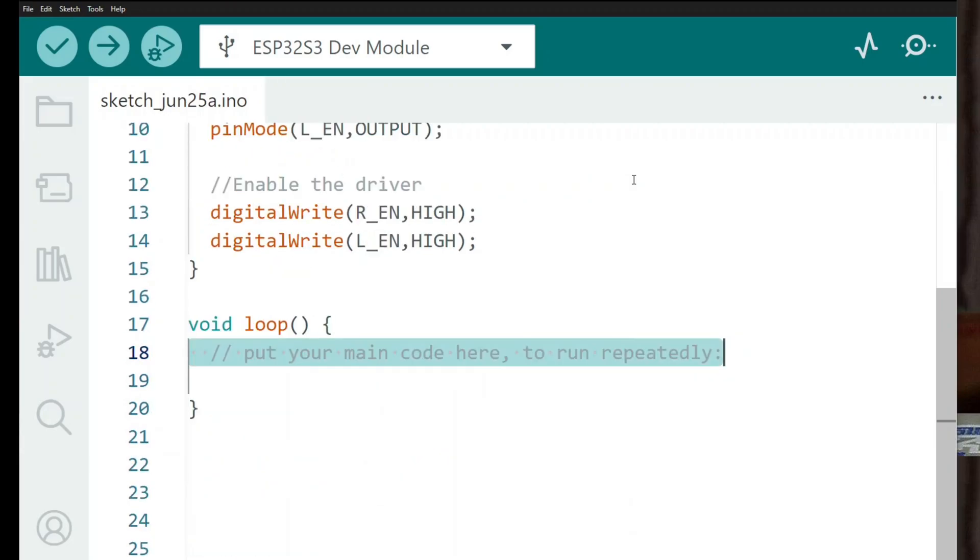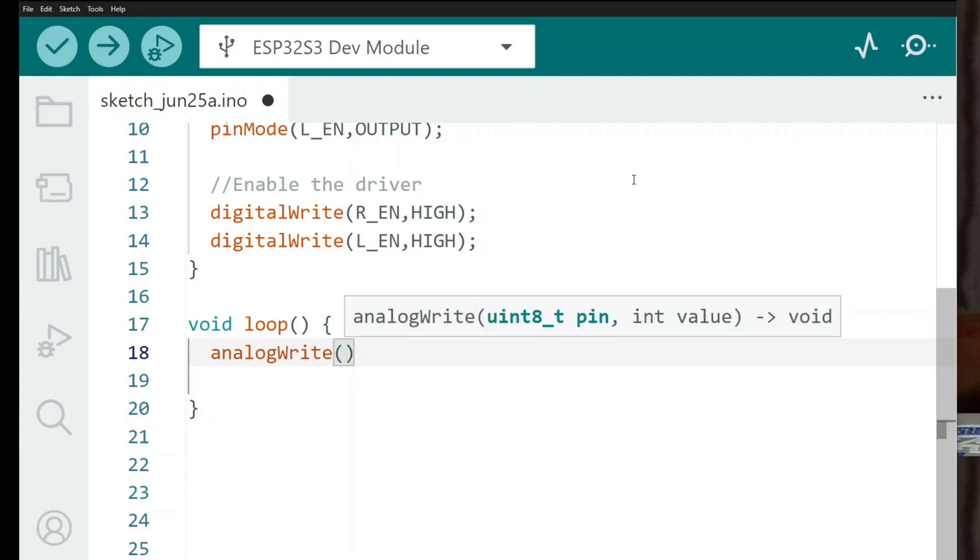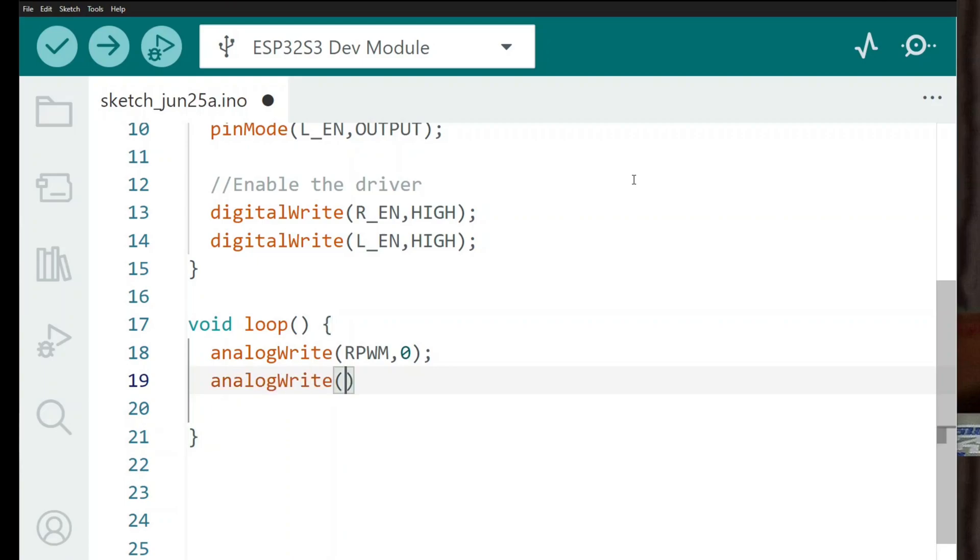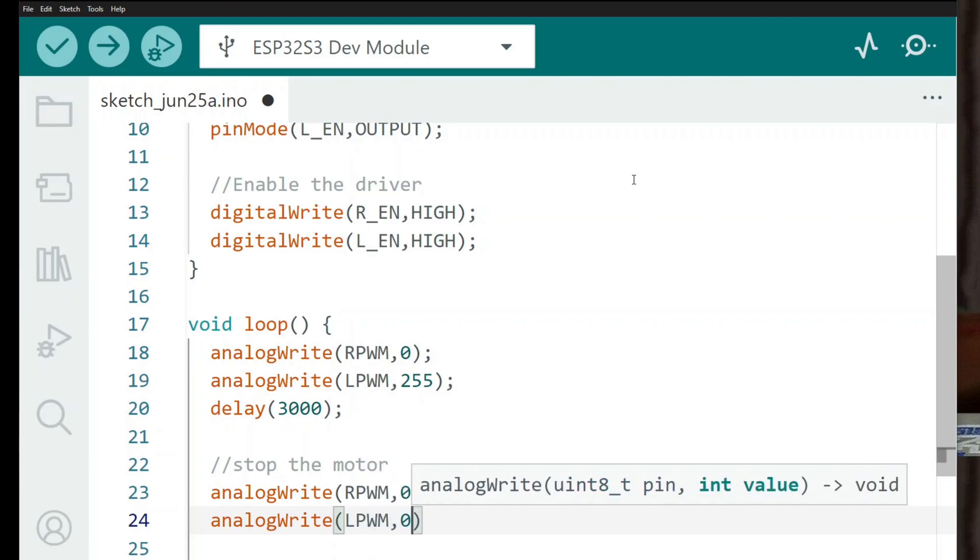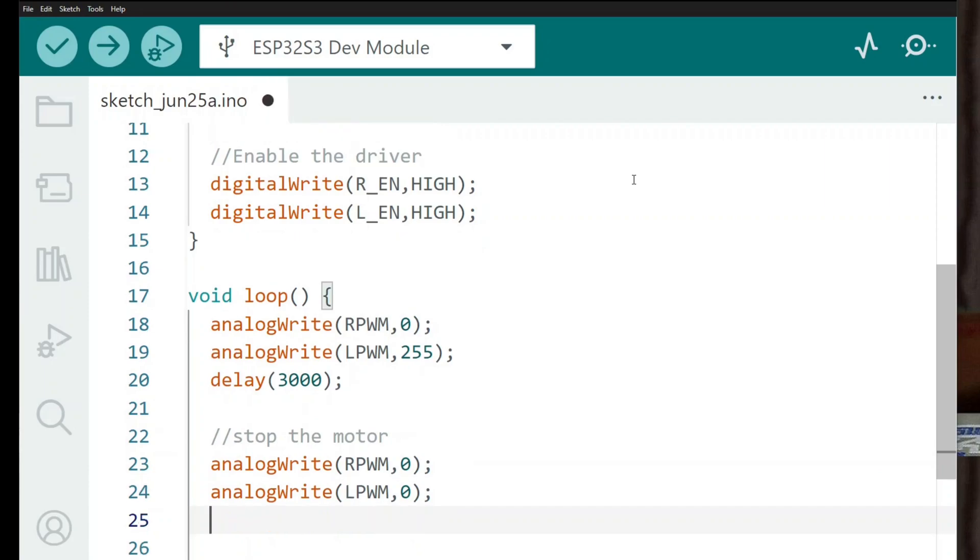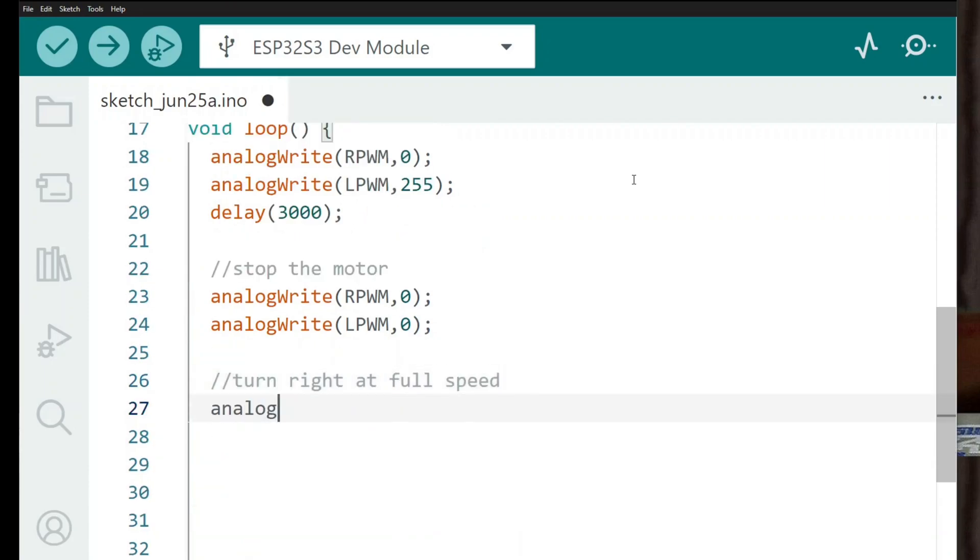Now inside the Loop function, we start controlling the motor's speed and direction. First, I write a command to turn the motor left at full speed for 3 seconds, then stop it for 2 seconds. Then, I write a command to turn the motor right at full speed. Next, the motor spins right at full speed for another 3 seconds, followed by another short stop.